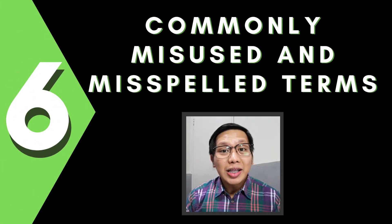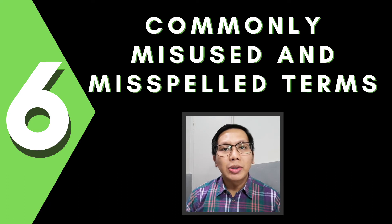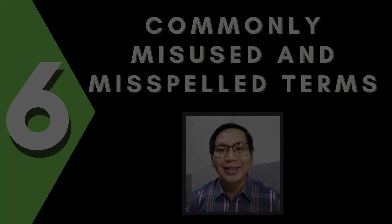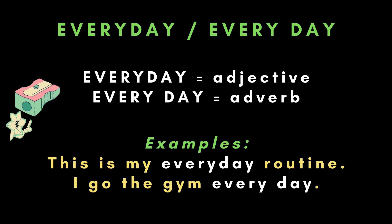To complete our list for this video, we must also be familiar with commonly misused or misspelled terms. First: "everyday" and "every day." "Everyday" without a space is used as an adjective and comes before the noun it describes, while "every day" with a space is used as an adverb. For example: "This is my everyday routine." "I go to the gym every day."